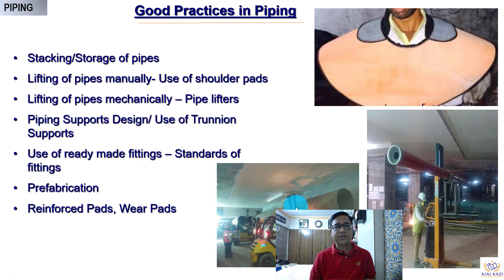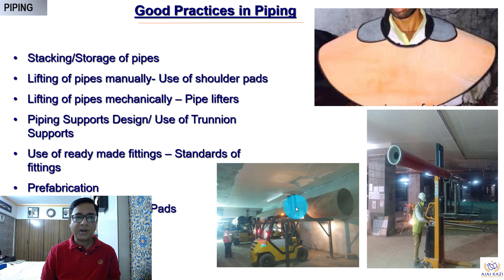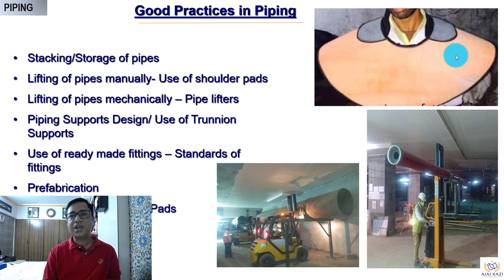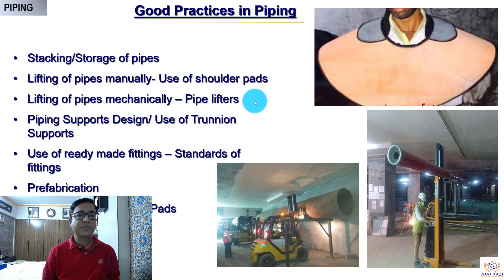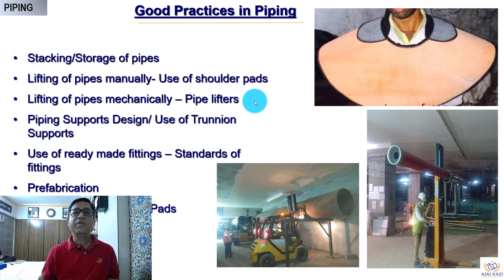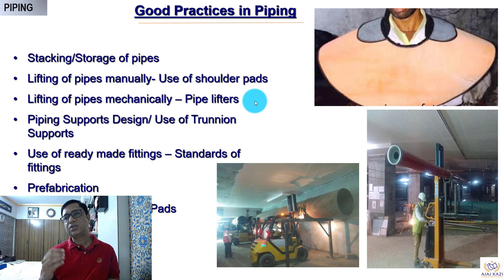Some good practices to look at: how do we store the pipes — this has to be done properly. How do we lift the pipes? Pipes below 100 mm have to be lifted manually, and when lifting manually, a shoulder pad is used so the pipe does not rest directly on the person's shoulder. Mechanical lifters can also be used as shown in the photographs. We need to have the right fittings available. For tap-offs specifically, it is better to do the work off-site — take measurements and fabricate off-site — because doing everything on site impacts quality, safety, and productivity.